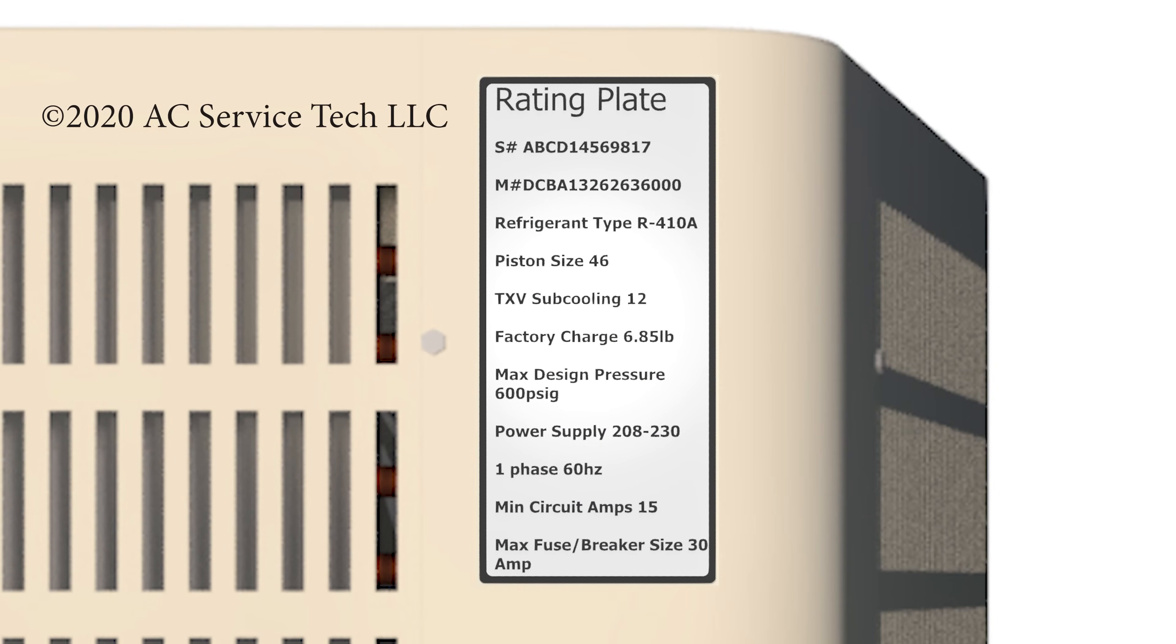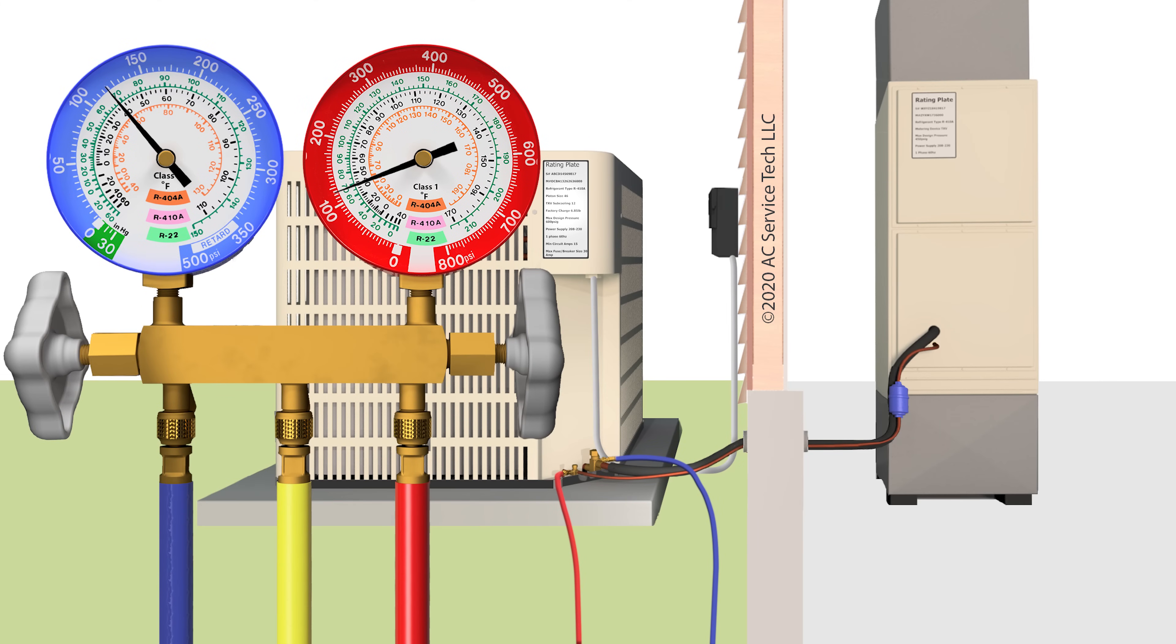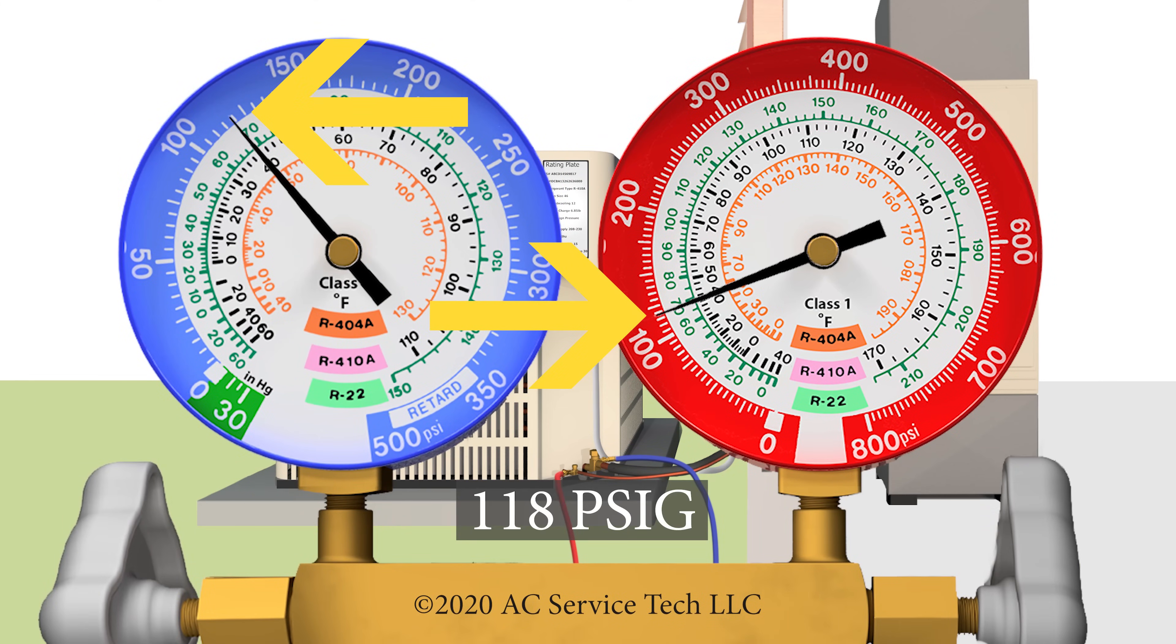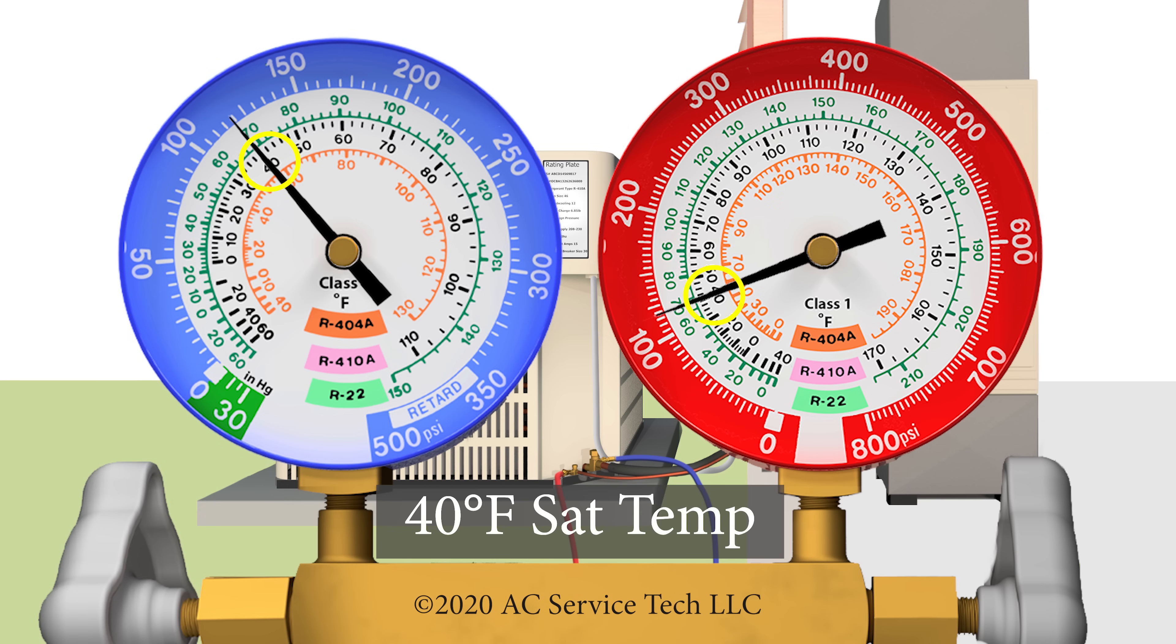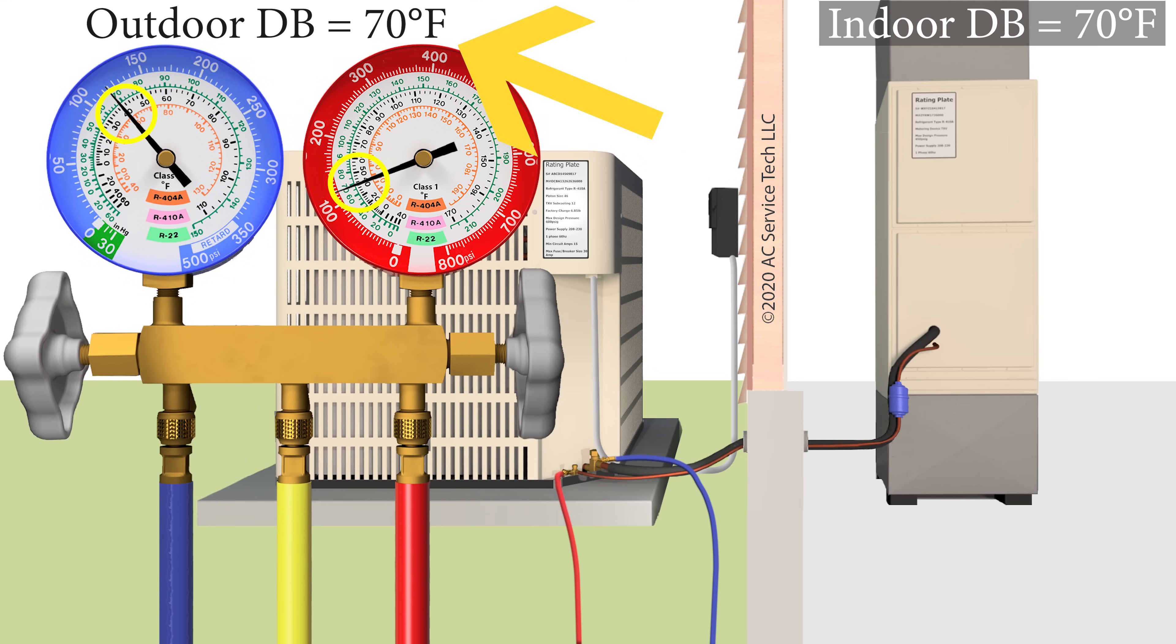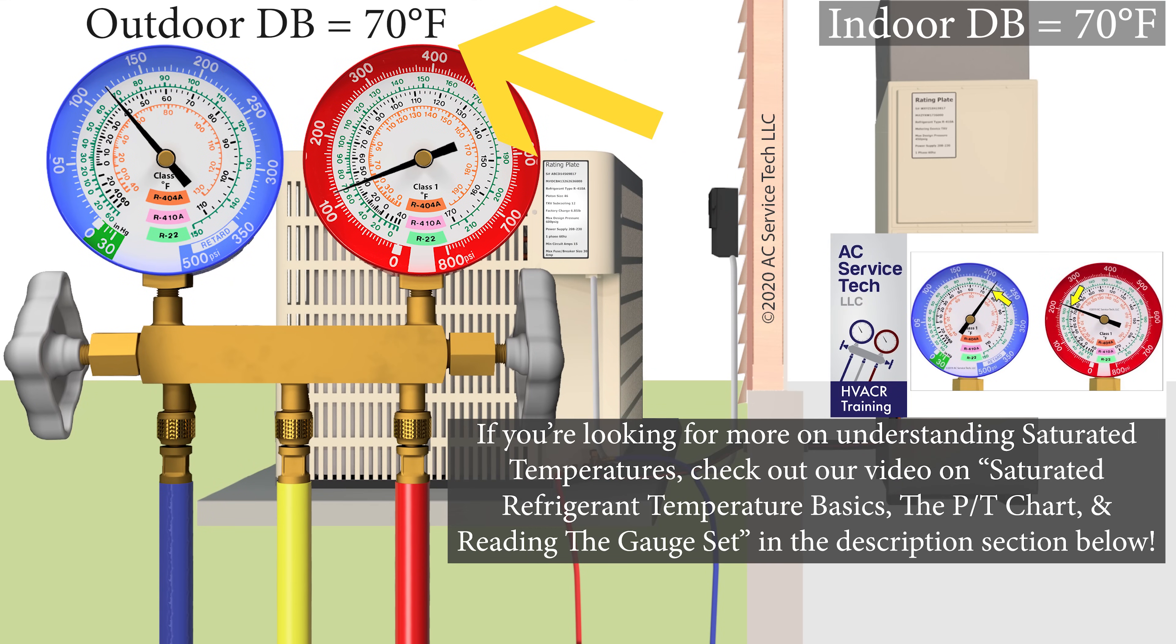We look at the rating plate and see we have R410A refrigerant in the system, and both gauges are measuring the same pressure, 118 PSIG. If we bring that into the inner ring for R410A, which is a saturated temperature, we see that we have 40 degrees, but the surrounding air temp is 70 degrees inside and outside the building. The saturated temperature should match the surrounding air temp. In this case, it should be 70 degrees.